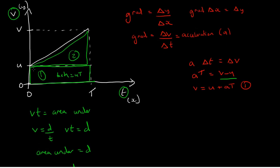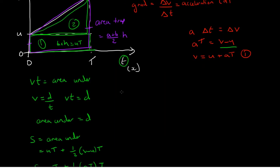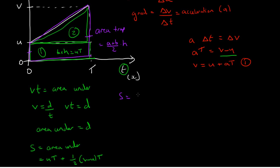Instead of splitting into a rectangle and triangle, we can consider the shape as a trapezium, outlined in purple, with two parallel sides and four sides altogether. The area of a trapezium is the sum of the parallel sides a and b, divided by two, times h — the distance between those sides. Applying this: s equals u plus v over two, times h. Since h is t, we get s equals half of u plus v times t. This is our third SUVAT equation.